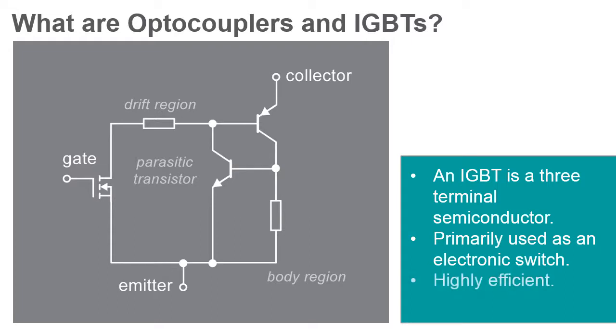It was designed to be both highly efficient and very fast switching. In operation, an IGBT is equivalent to the combination of a MOSFET and a power transistor.